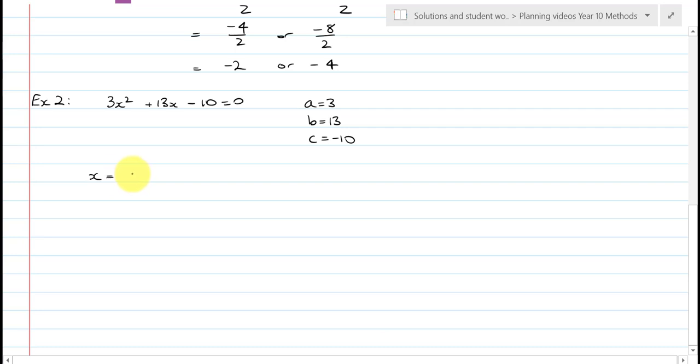And we have this, x is equal to negative b, negative 13, plus or minus the square root of 13 squared, minus 4, times 3, times negative 10, all over 2 times 3. And so, this is equal to negative 13, plus or minus the square root of 169, plus 120, over 6.